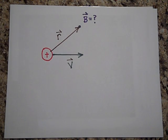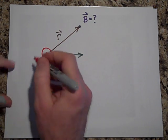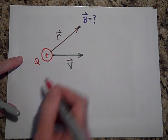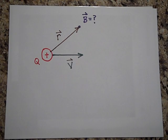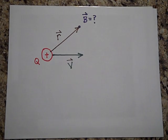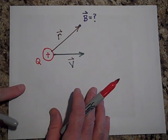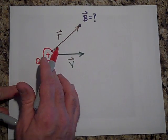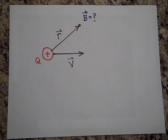What the strength of that field should depend on a few things. It should depend on the Q, just how much Q you have. It should depend on how fast you're going. So it's going to depend on V. It's also going to depend on R, how far away you are from it. It should depend also on the angle that R makes with V.